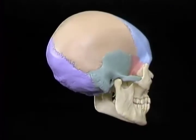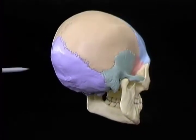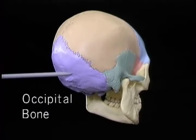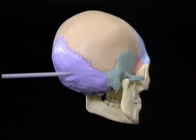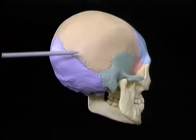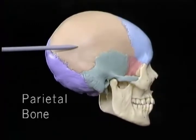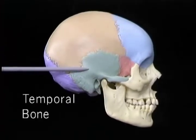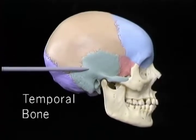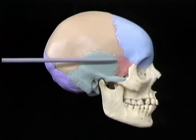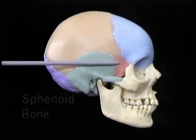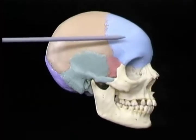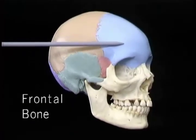The principal bones that form the cranium are the occipital bone behind and below, the parietal bone and temporal bone on each side, the sphenoid bone and the frontal bone.